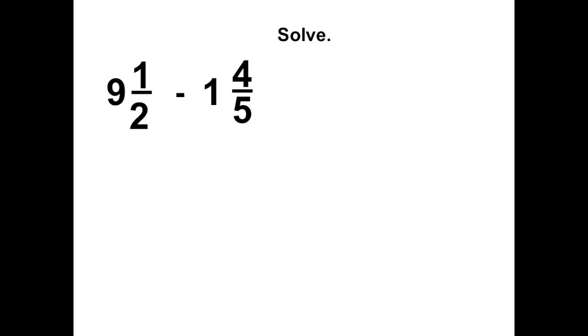Solve 9 and a half minus 1 and 4 fifths. First we can convert each mixed fraction into an improper fraction by doing 9 times 2, which gives us 18, and 18 plus 1 gives us 19. The denominator stays the same.